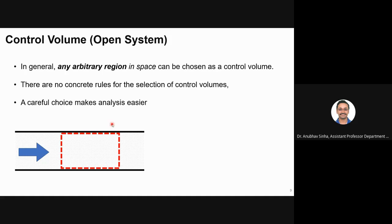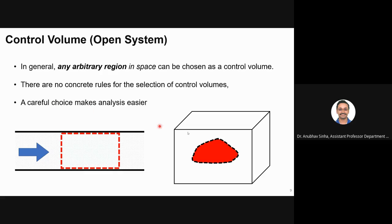A control volume can use any arbitrary region in space — there are no fixed rules that it must be a square or rectangle. It could be any arbitrary shape. However, if you make a careful and proper choice, your analysis will be easier. For example, in a pipe, I can take the control volume covering the entire diameter or just half — both are theoretically correct, but the full-diameter choice will make analysis easier.